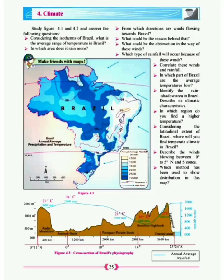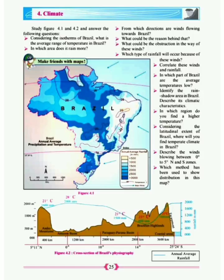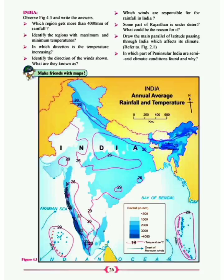This is called map reading - when you understand the map, they ask particular questions and you have to answer. The rest of those questions you try doing as homework. Now coming to the next page - the previous map we saw was of Brazil. Now we will talk about India.